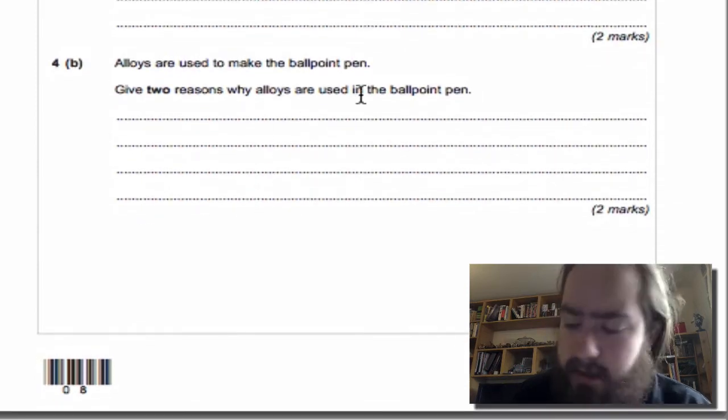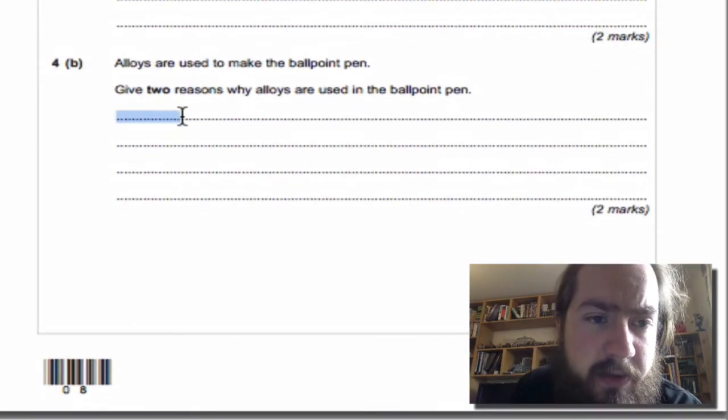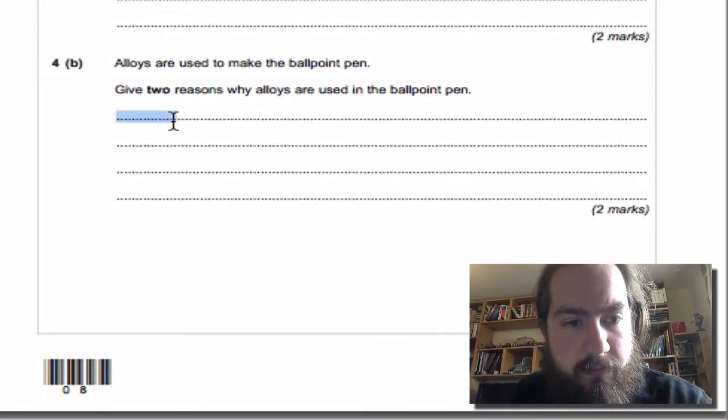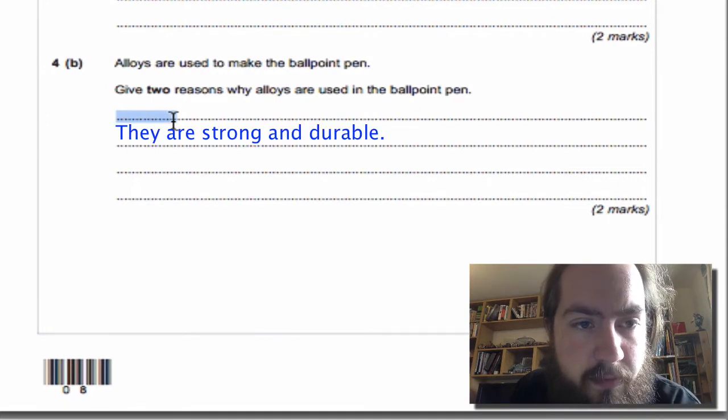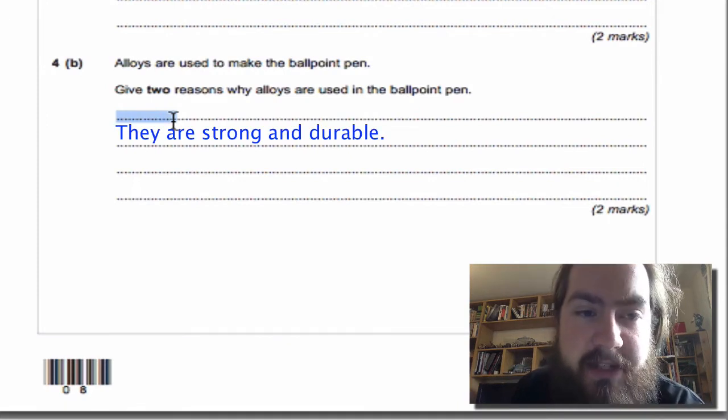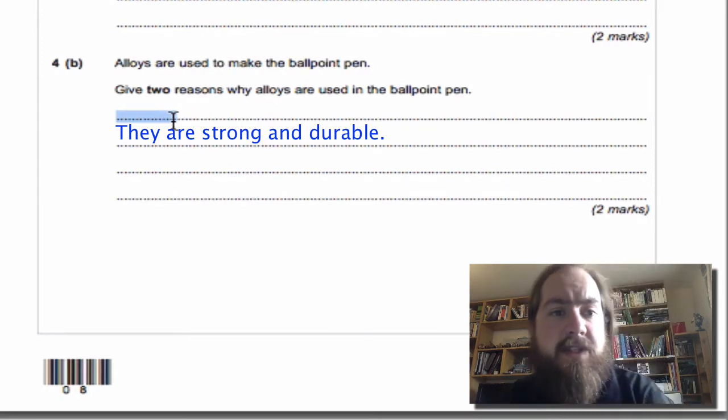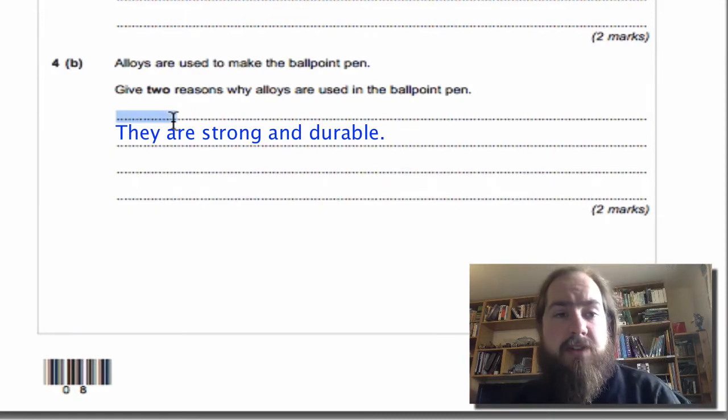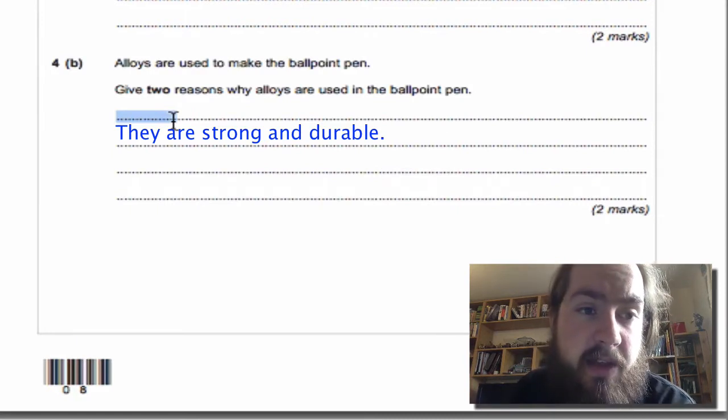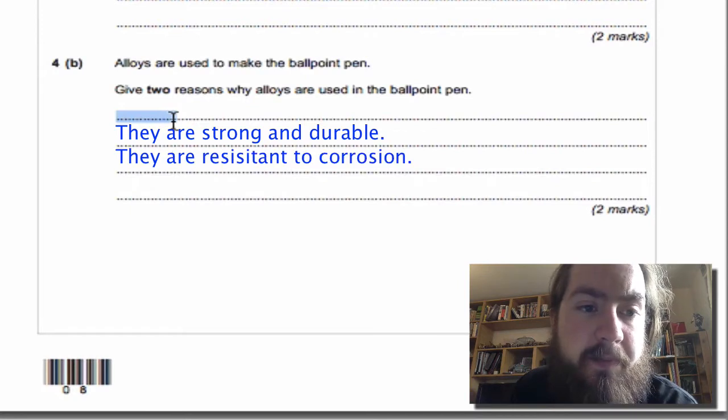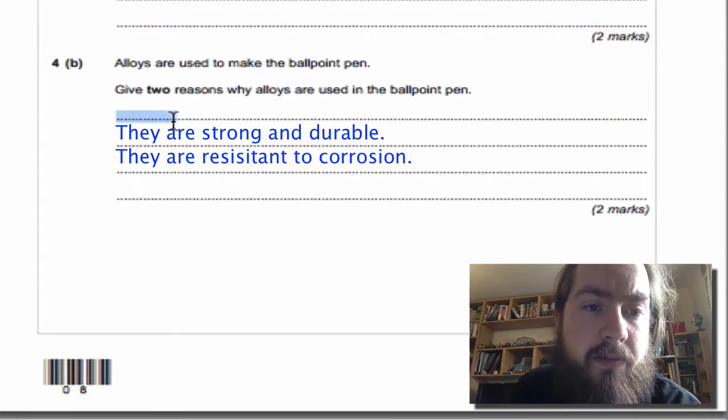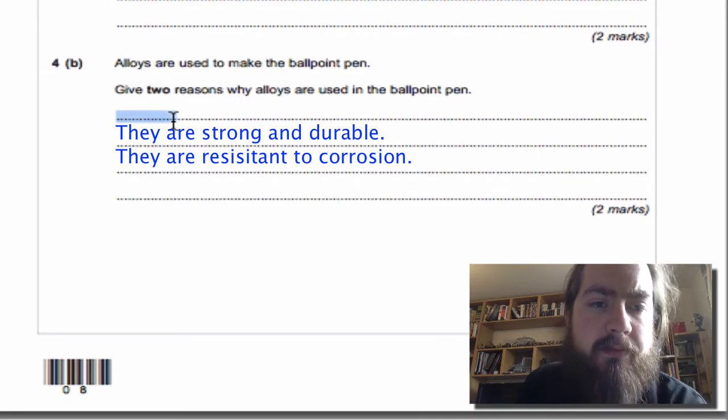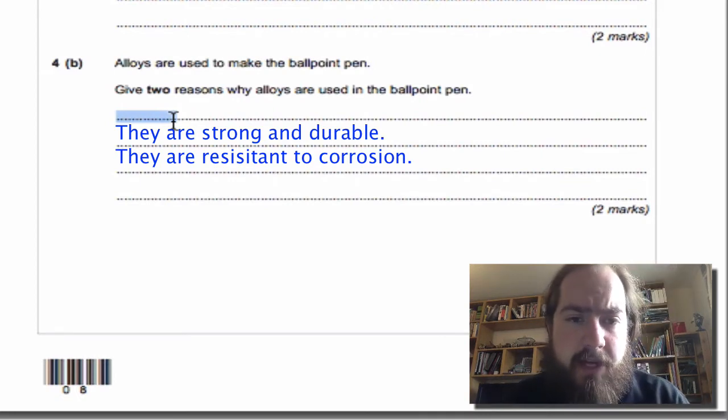So the reason the stainless steel is used is because it's strong, which means it will last longer, so it's durable. And the reason the nickel is used is because it doesn't rust—because if your pen rusts from the ink you won't be able to use it—so it's resistant to corrosion. Both those will get you a mark.